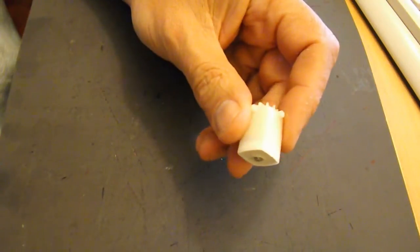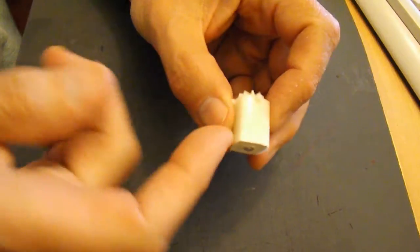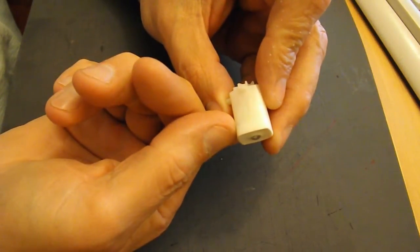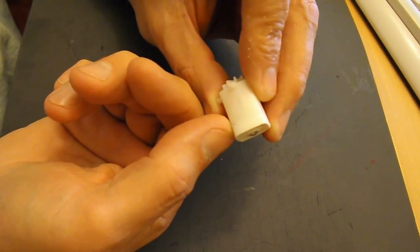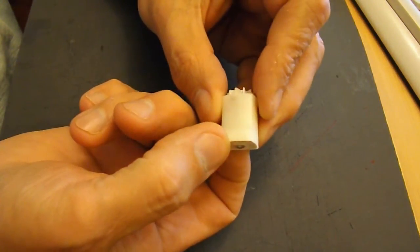So, this is the fella we want to get apart. It looks like there's about five millimeters there of this white silicon or whatever it is.